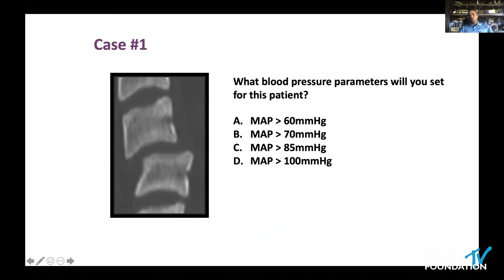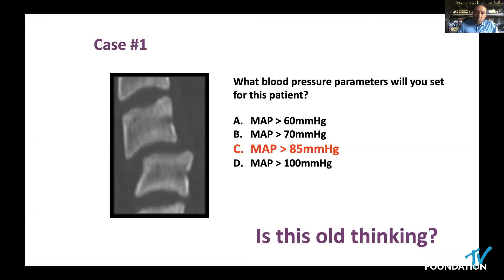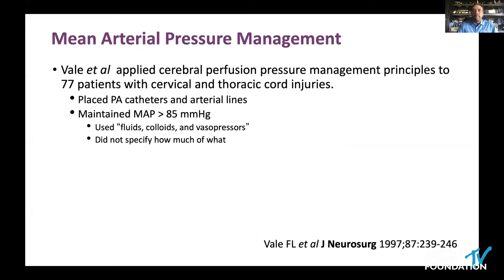The last topic is blood pressure management. What blood pressure parameter would you put in place for this patient — MAP greater than 60, 70, 85, or 100? The classic answer is MAP greater than 85. Where does that come from? It comes from one study out of Phoenix in the late 1990s. Mark Hadley was part of this effort and Vail was the first author.